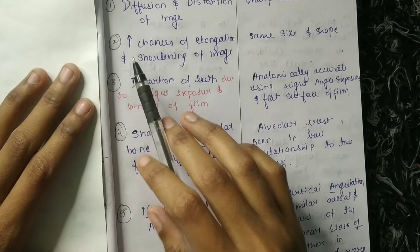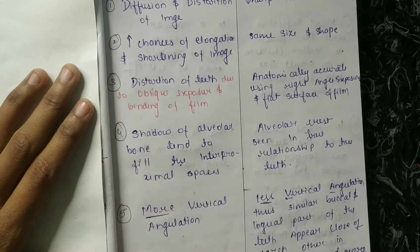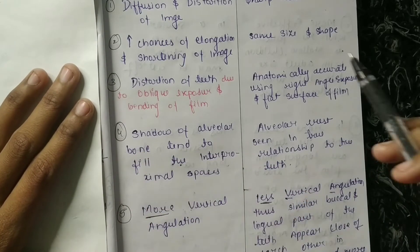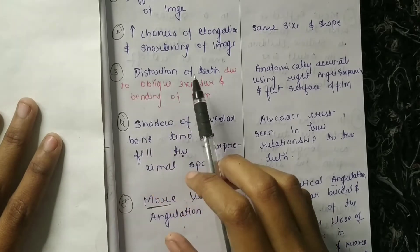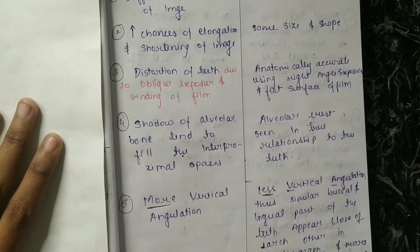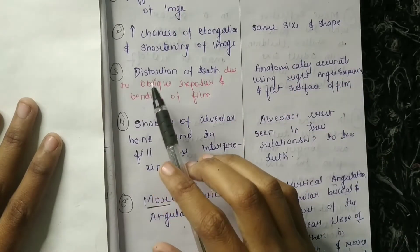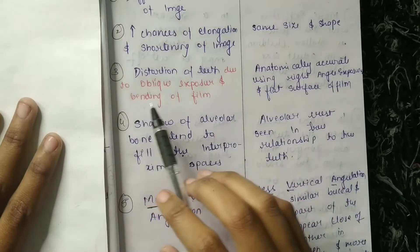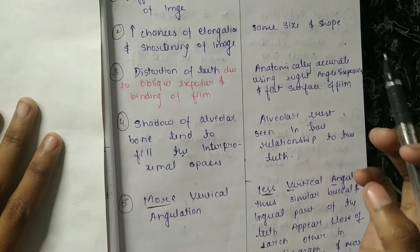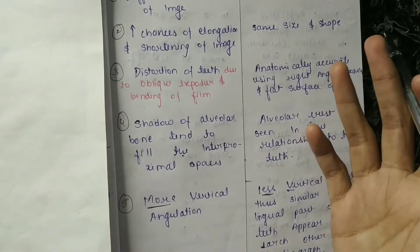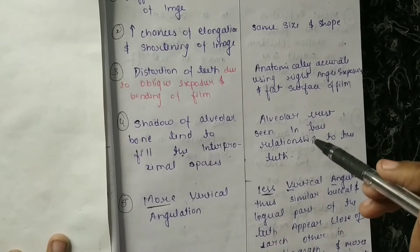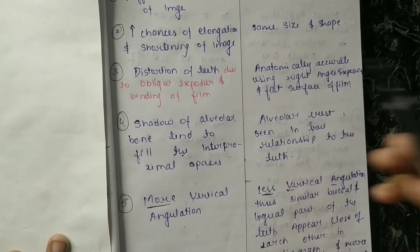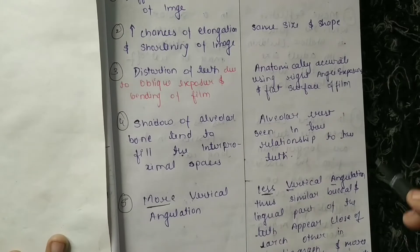The second difference: in short cone there are high chances of elongation and shortening of the image, but in long cone you get the same size and shape. The third difference: in short cone there is distortion of teeth due to oblique exposure and bending of the film. In long cone the image is anatomically accurate, using right angle exposure and flat surfaces of the film.